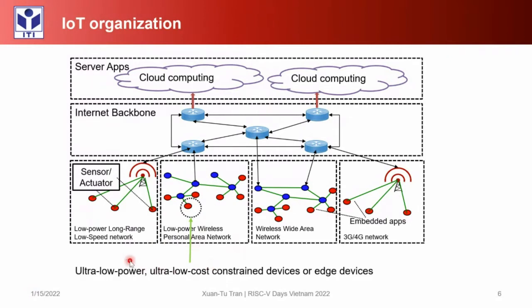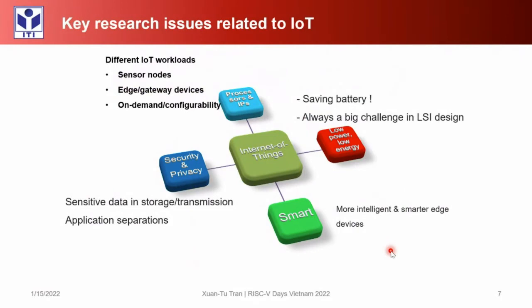Application is carried out using actuators. In our research group we focus on the IoT node — the sensor node. We try to build ultra low power, ultra low cost constrained devices. As the last presentation showed, there may be 50 billion IoT devices in a few years, so power consumption is one of the big problems for IoT. For our research group, we focus on some research issues related to IoT.